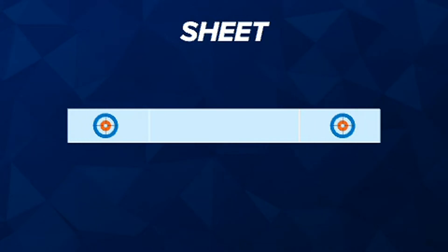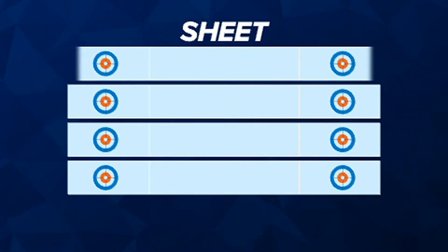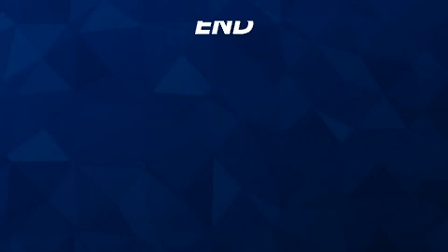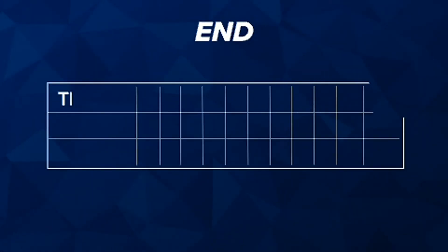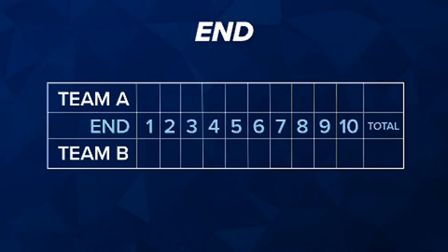Sheet. That's the playing surface. Like a bowling alley, there are multiple sheets in the arena, so there will be several matches happening side by side and simultaneously. End. The name of each round of a curling match. Think of it like an inning in baseball.